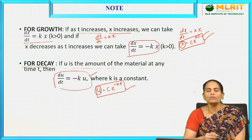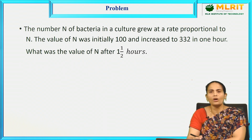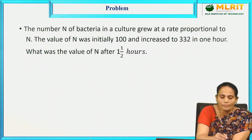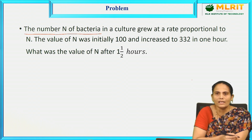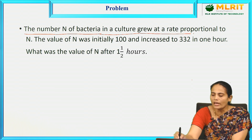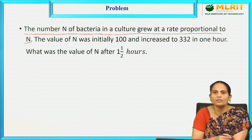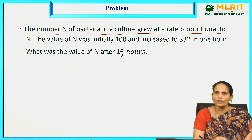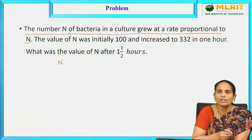Now let us see one example on the law of natural growth or decay. The problem: the number N of bacteria in a culture grows at a rate proportional to N. The number of bacteria is denoted by capital N.